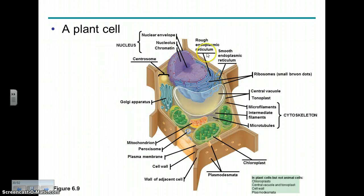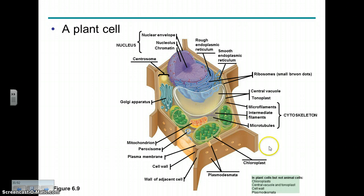Plant cells — how are they different? They have some things that animal cells don't: chloroplasts, a large central vacuole, a cell wall, and plasmodesmata, which are connections between cells.